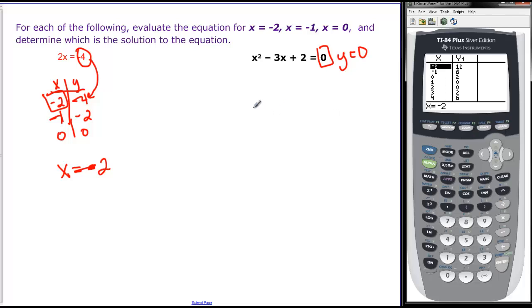And at negative 2, I can see that it's 12, not 0. At negative 1 I can see it's 6, not 0. And at 0 I can see that it is 2, not 0. So none of those are actually solutions. So there's none here that are solutions.